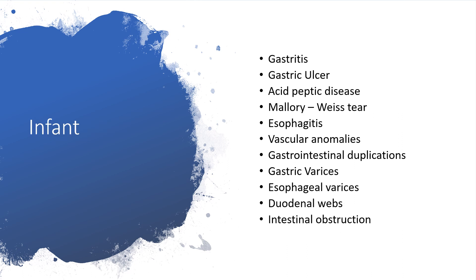What if this is an infant? Are we dealing with gastritis or gastric ulcer? Is this acid-peptic disease or Mallory-Weiss here? Is this esophagitis or vascular anomalies? Any gastrointestinal duplication or gastric varices, including esophageal varices? Are we having blood in our wives or intestinal obstruction?